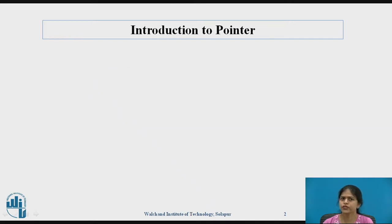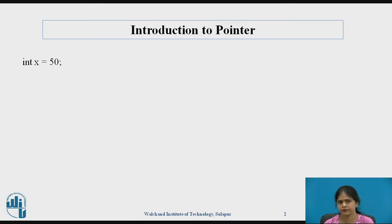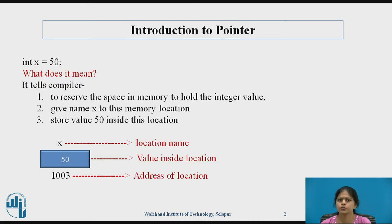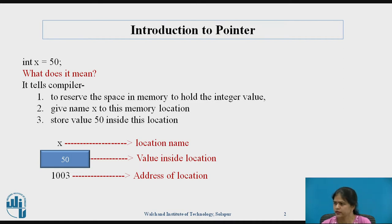Before moving towards pointers, let us understand the role of computer memory during declaration of a simple variable. For example, integer x is equal to 50. This declaration tells the compiler to reserve space in memory to hold the integer value, give name x to this memory location, and store value 50 inside this location. So here x is a location name, 50 is the value stored inside it, and 1003 is the address of that location.